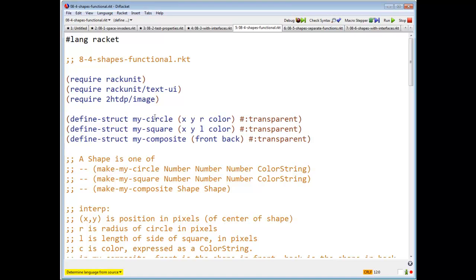And here I have defined struct my circle, x, y, r, color, my square, x, y, l, color, and my composite, front, back.